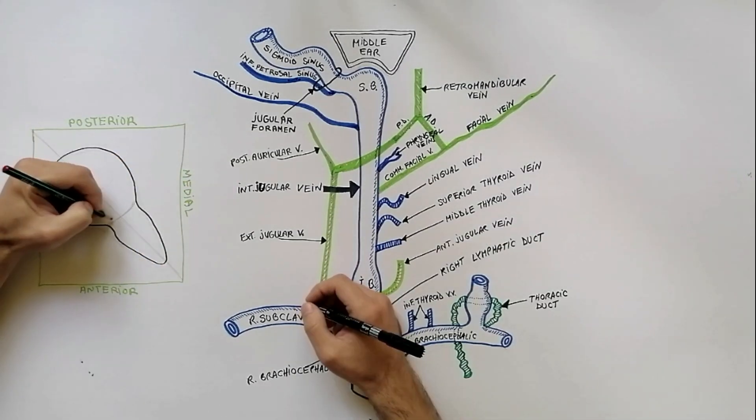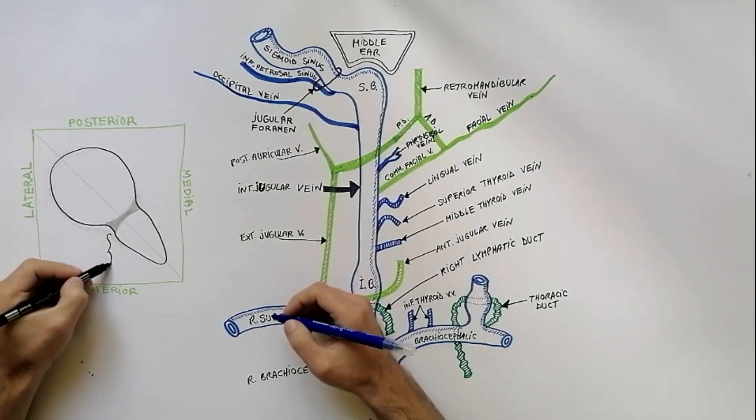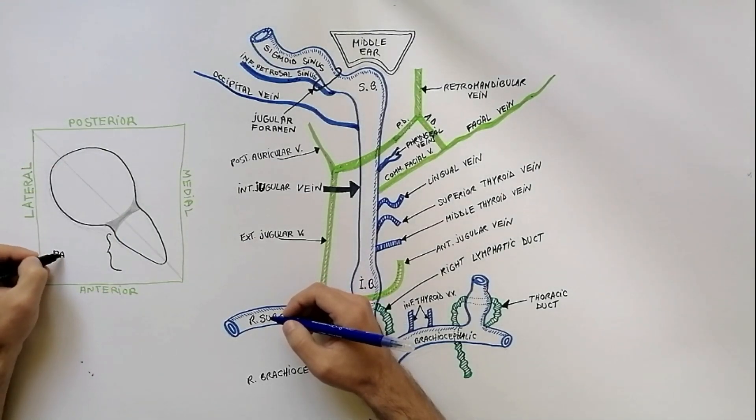The foramen is divided into two parts by a fibro-osseous bridge that connects the jugular spine on the petrous part of the temporal bone and the jugular process of the occipital bone. The anteromedial compartment, also called the pars nervosa,